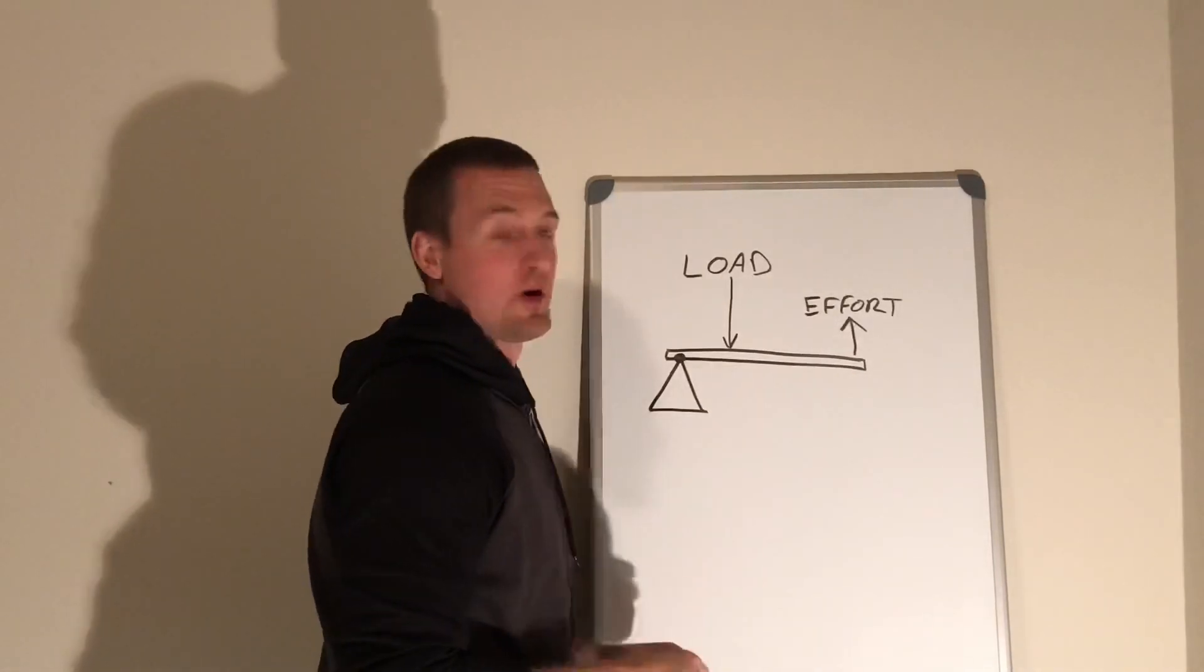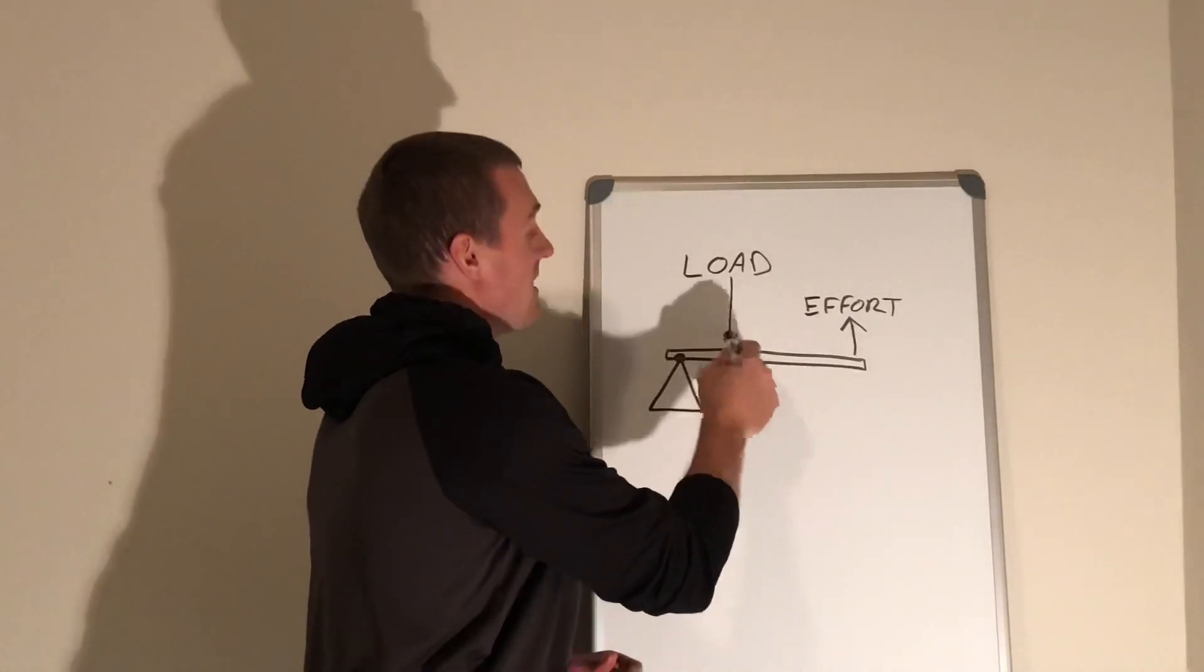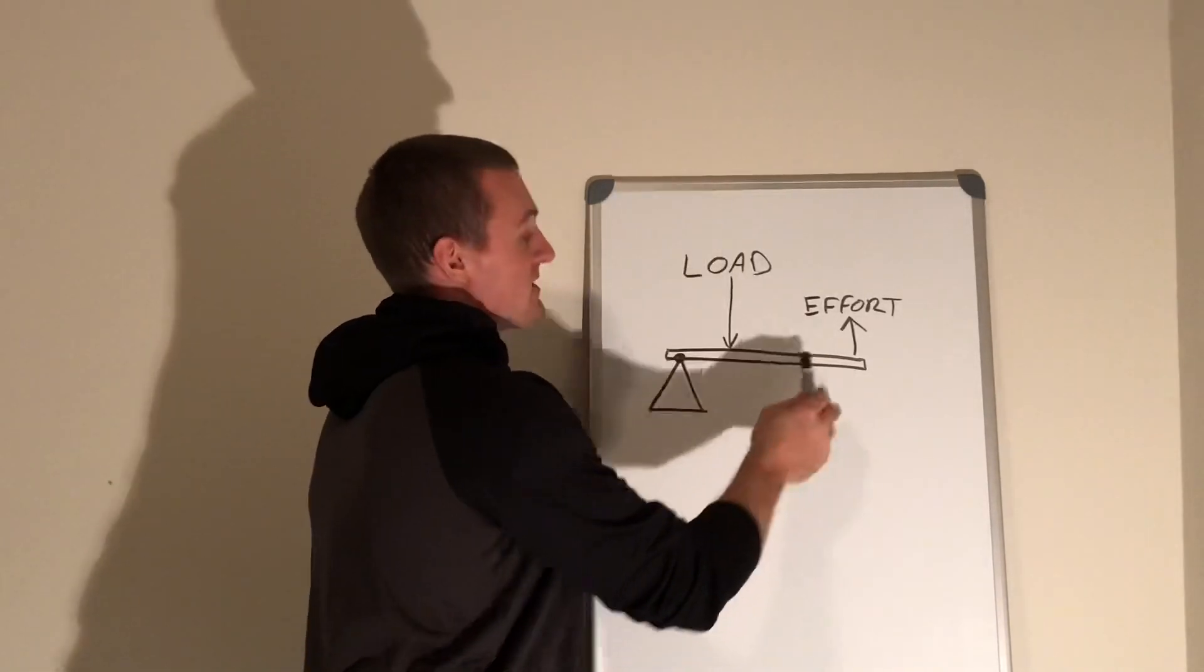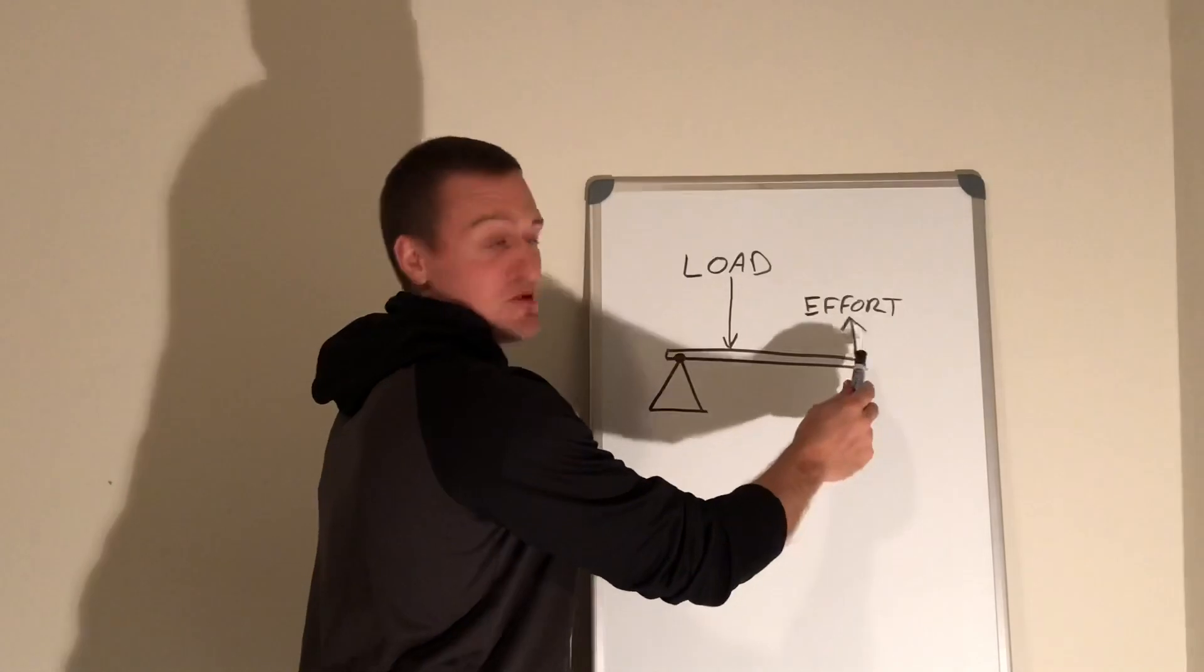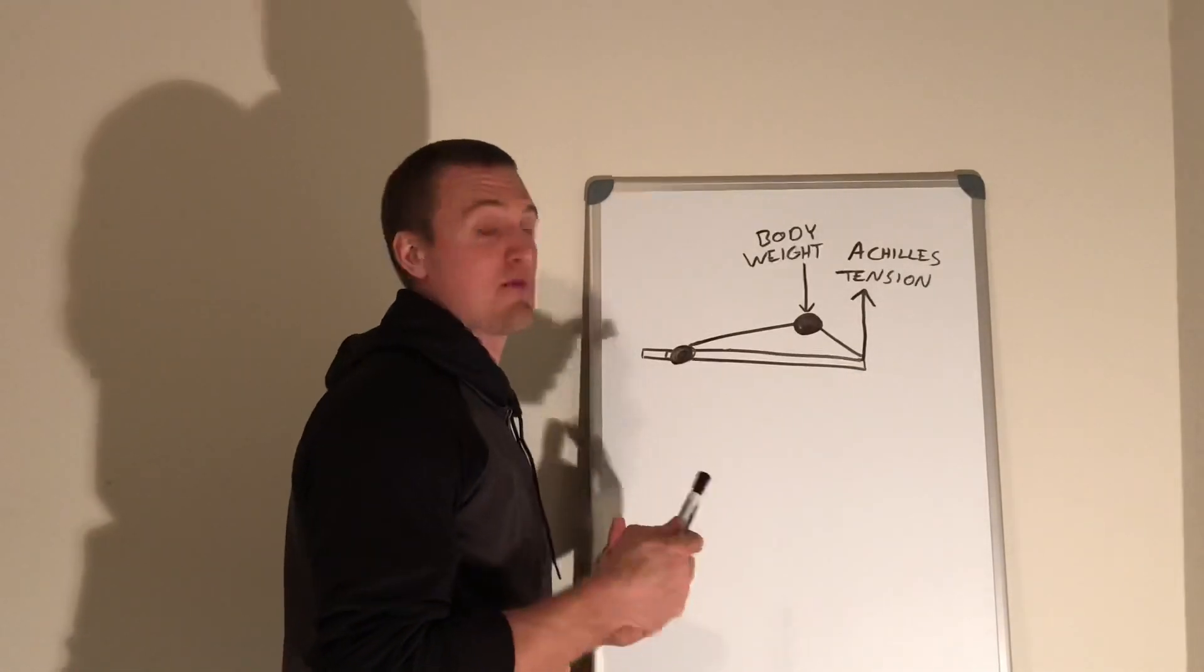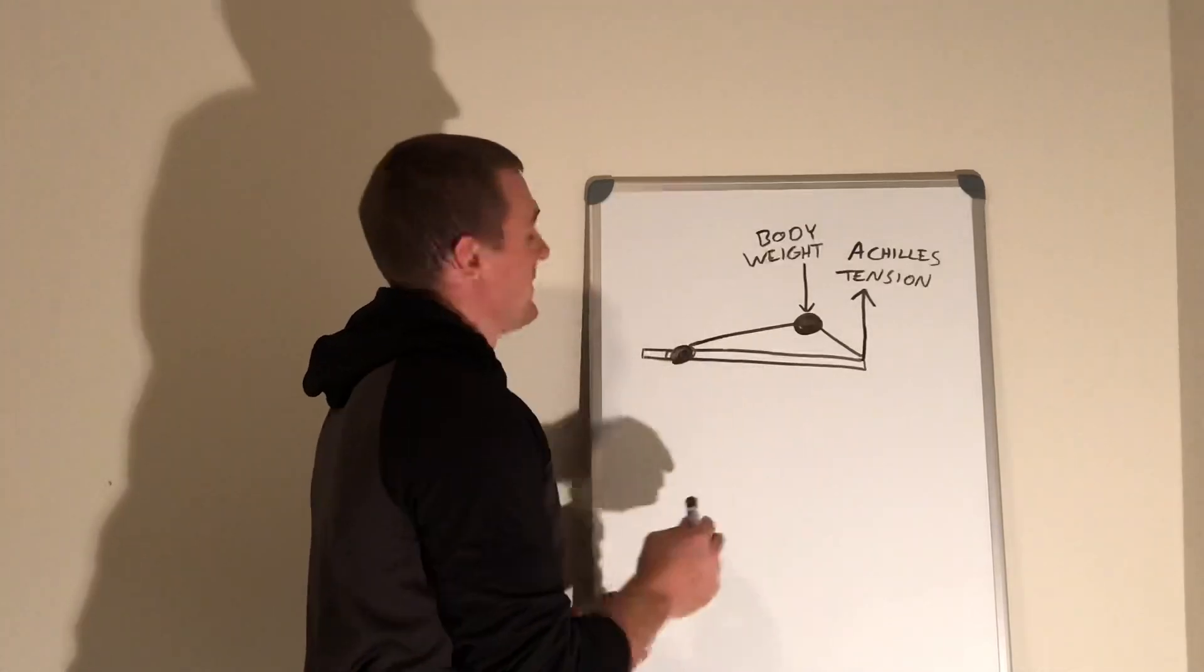An example is a wheelbarrow where you can put a pretty heavy load here, but it's close to the wheel and it'll still be easy to tilt up because you're lifting out on the end of the handles. You have more leverage. Now people have applied the second class lever model to the foot.